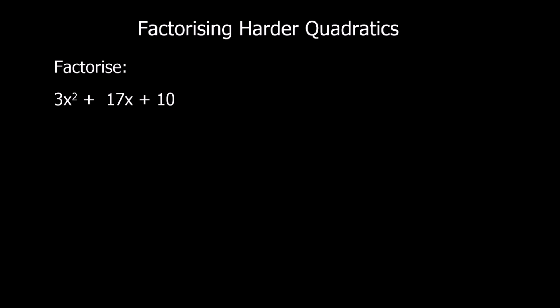In this video, I'm going to show you another method of factorising harder quadratics — factorising a quadratic with a coefficient in front of the x squared. This one here has got a 3 in front of the x squared, so that makes it harder to factorise, but hopefully this method makes it a lot easier.